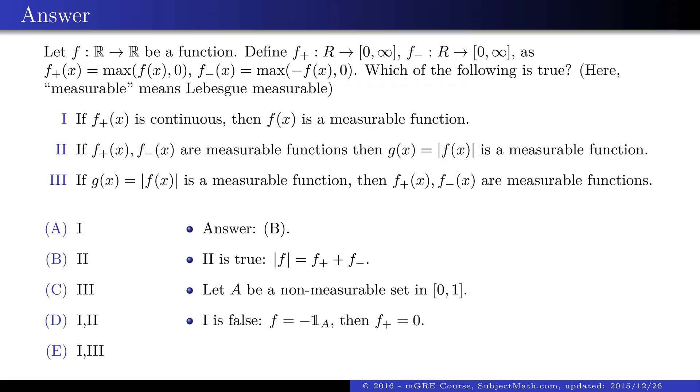Using that indicator function of that set, we construct a non-measurable non-positive function, so F plus is constant 0, thus measurable. The complement of the Vitali set is a non-measurable set as well.